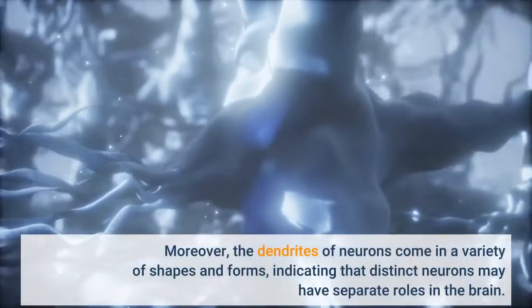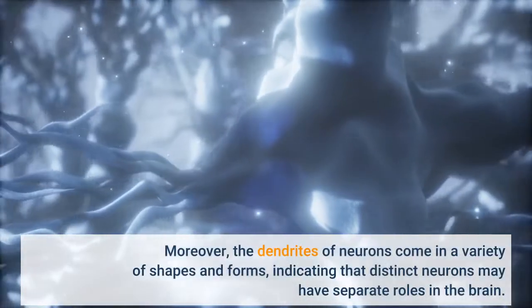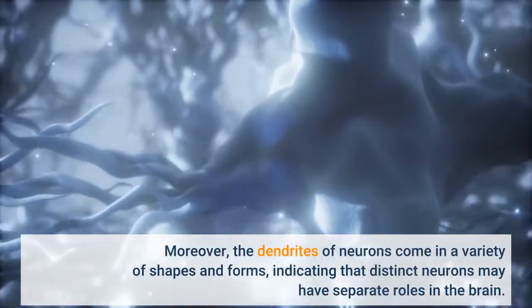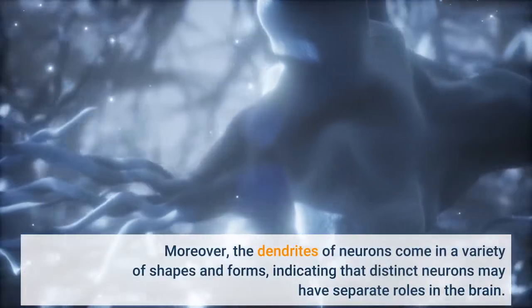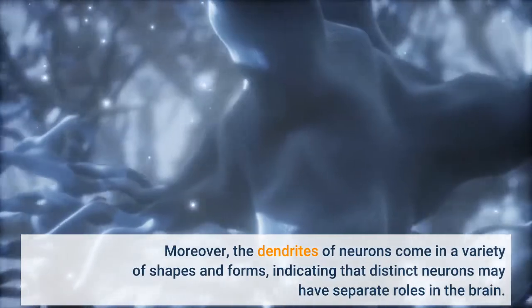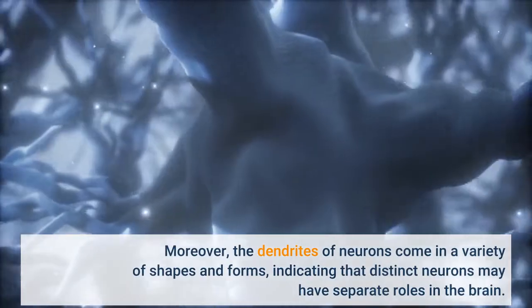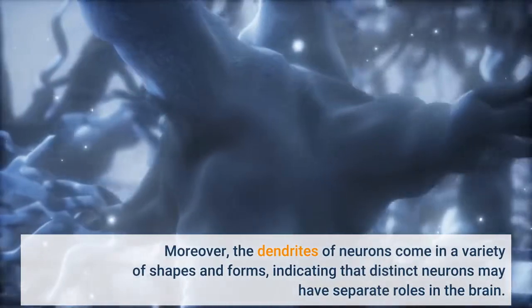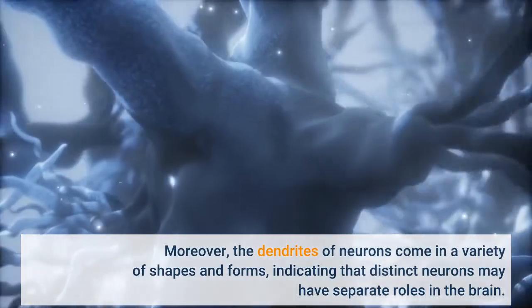Moreover, the dendrites of neurons come in a variety of shapes and forms, indicating that distinct neurons may have separate roles in the brain.